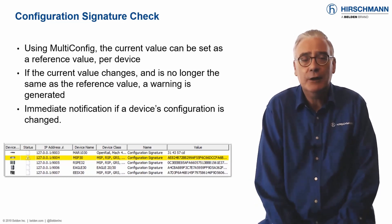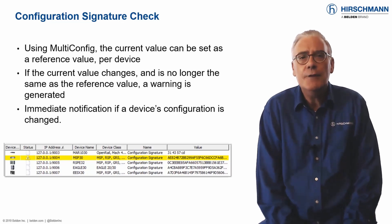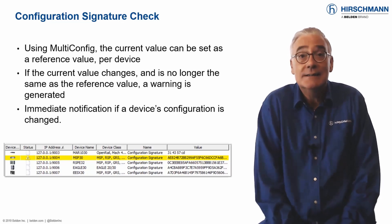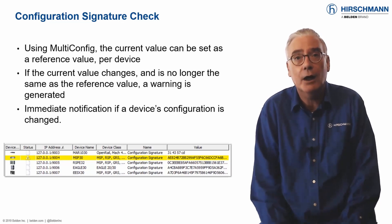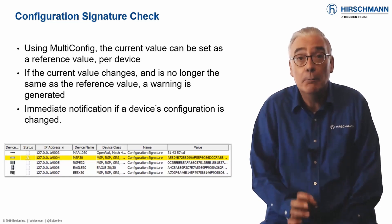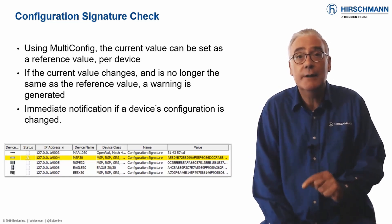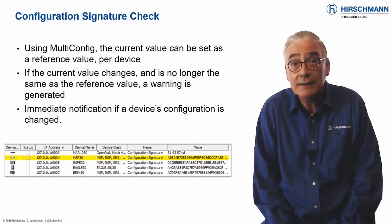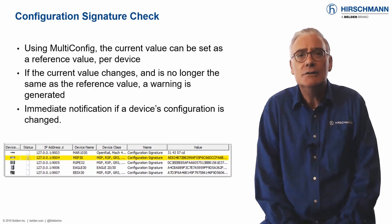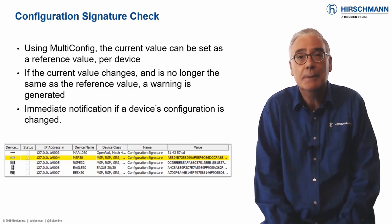Each switch has a configuration checksum known as a signature. If the configuration changes, the signature will change and Industrial HiVision will generate an alarm. Even better, if the configuration is reverted to the previous value, a third signature will be generated — not the original signature. So you can prove that a configuration was changed, even if the change has been reverted.